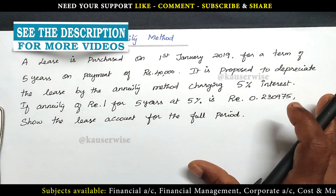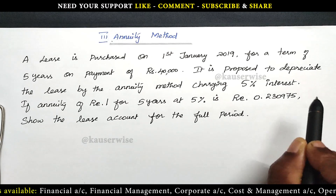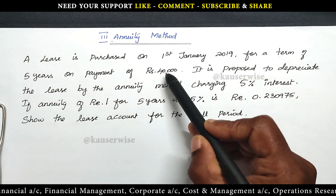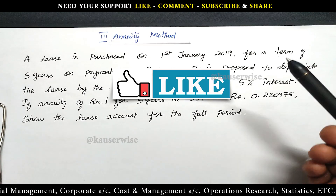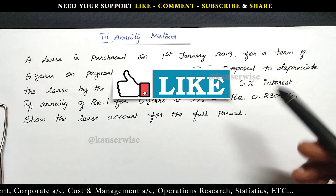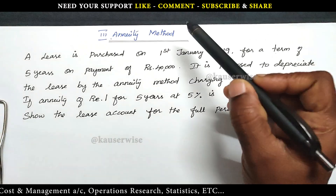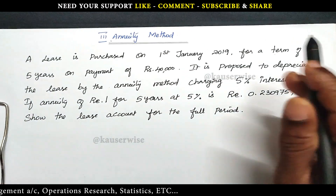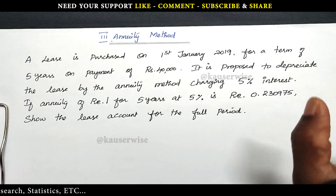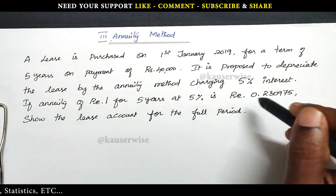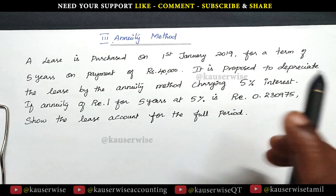Based on that, here we have to calculate a fixed percentage of interest on the capital employed, which will be added along with the cost every year. So every year the depreciation amount is going to remain the same according to this method. That particular depreciation amount is a part depreciation and part interest is also included. Let's see the problem for better understanding.